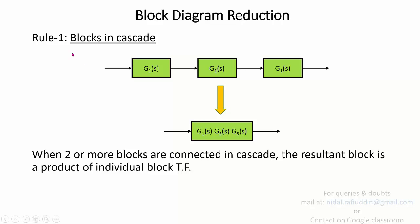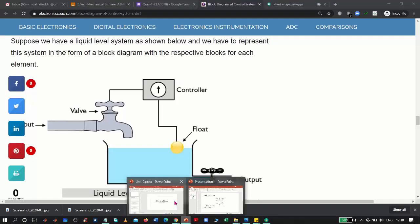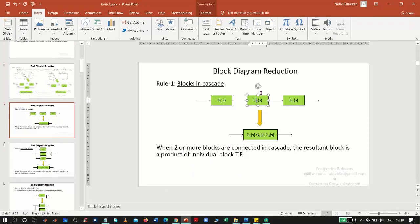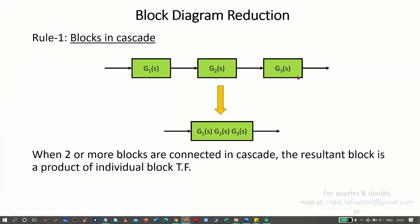Rule 1: When blocks are connected in cascade or series, you simply multiply all the transfer functions of individual blocks to obtain the final transfer function. So these blocks can be reduced to a single block with transfer function g1 times g2 times g3. When two or more blocks are connected in cascade or series, the resultant block is the product of the individual block transfer functions.